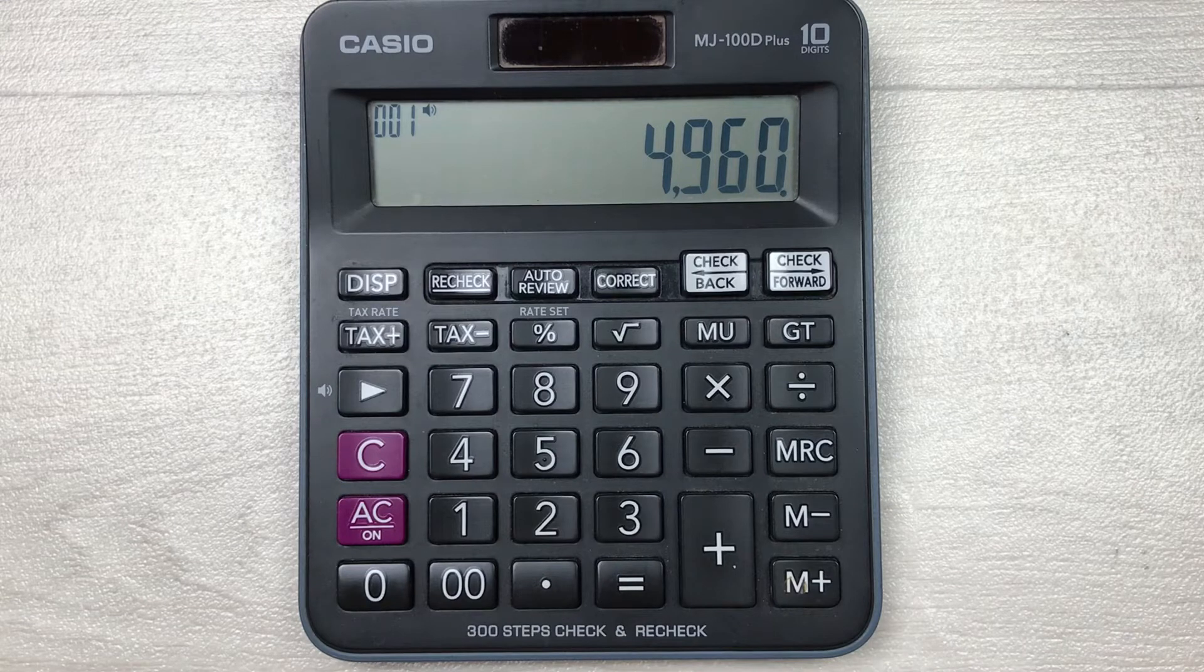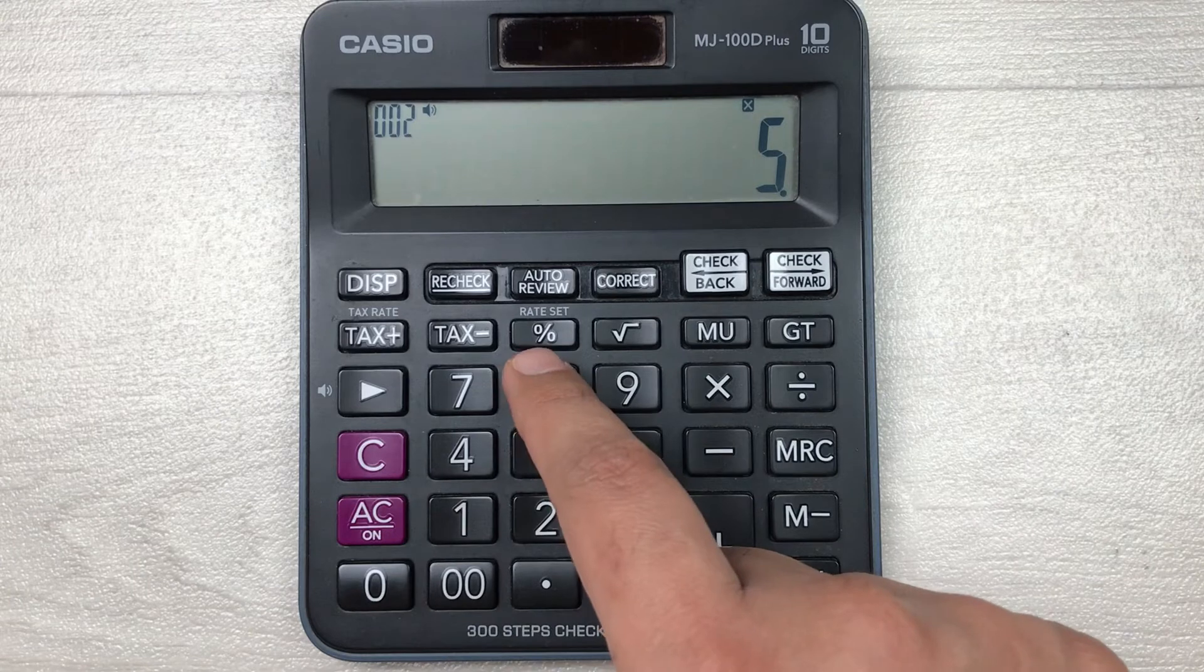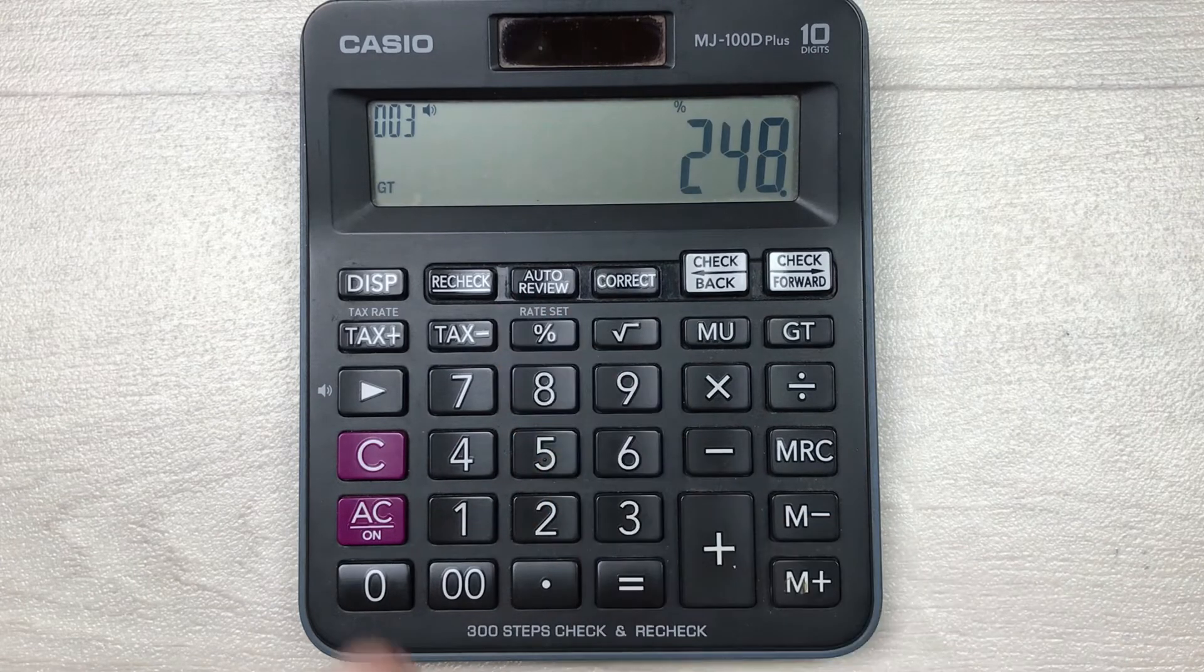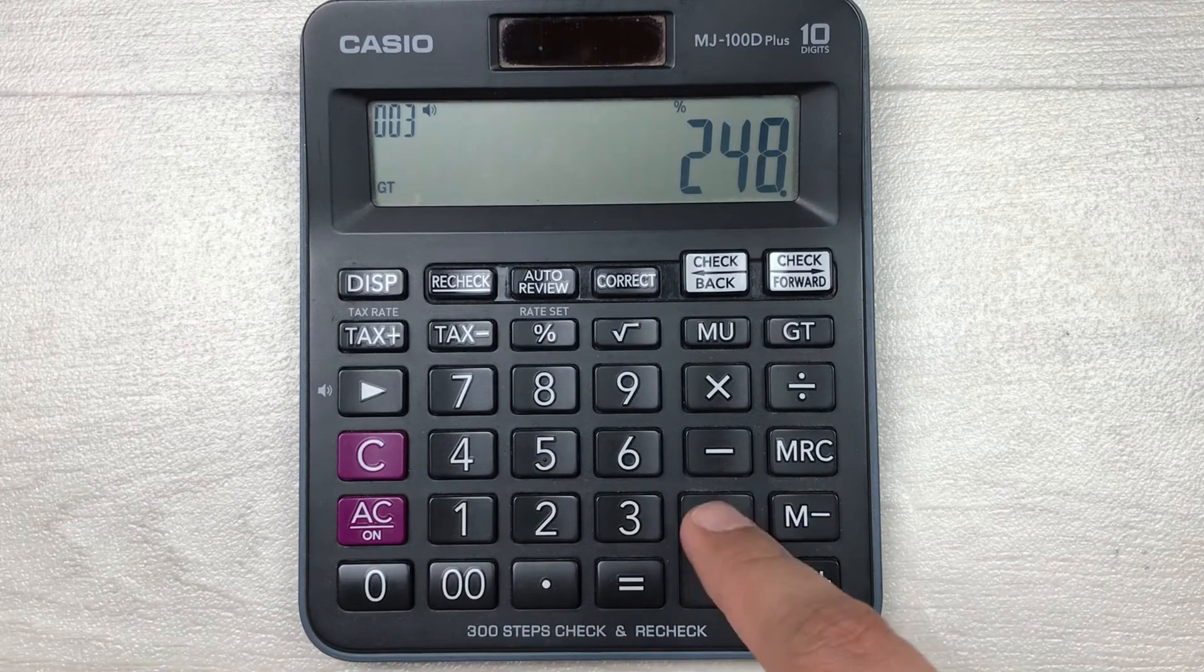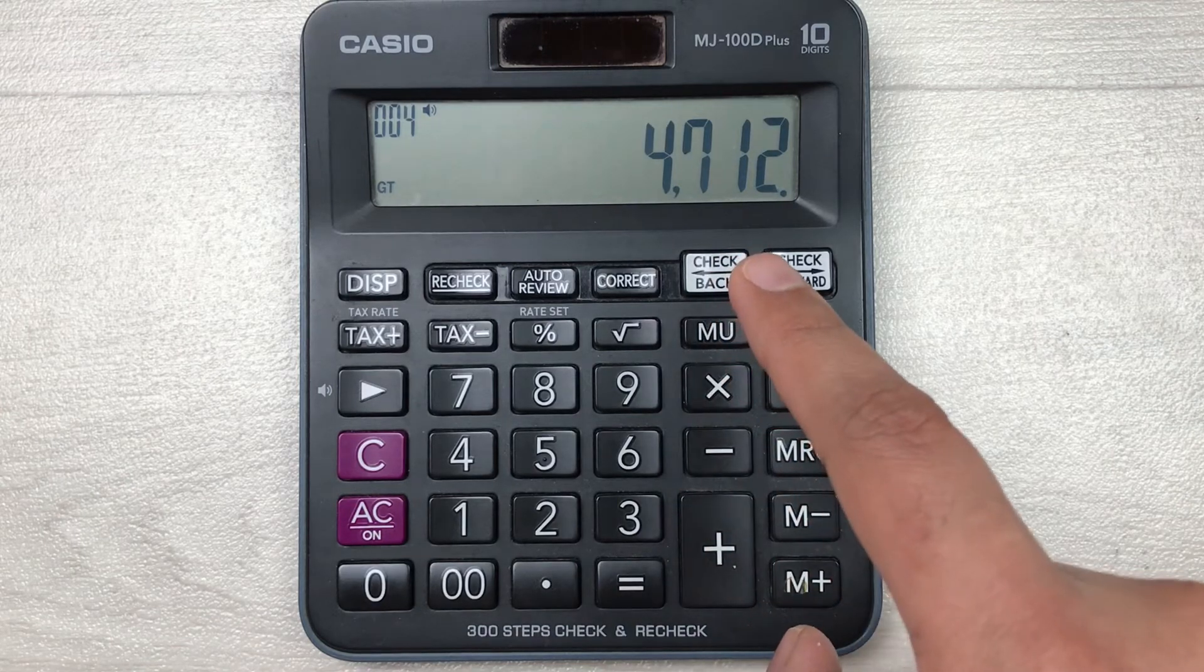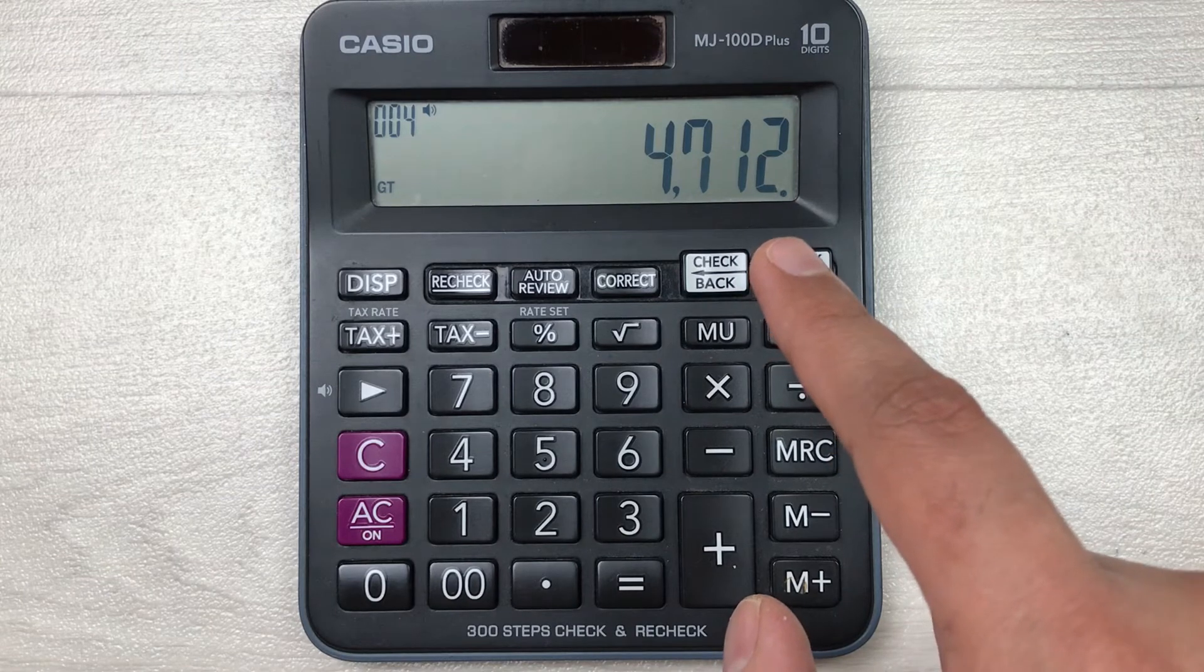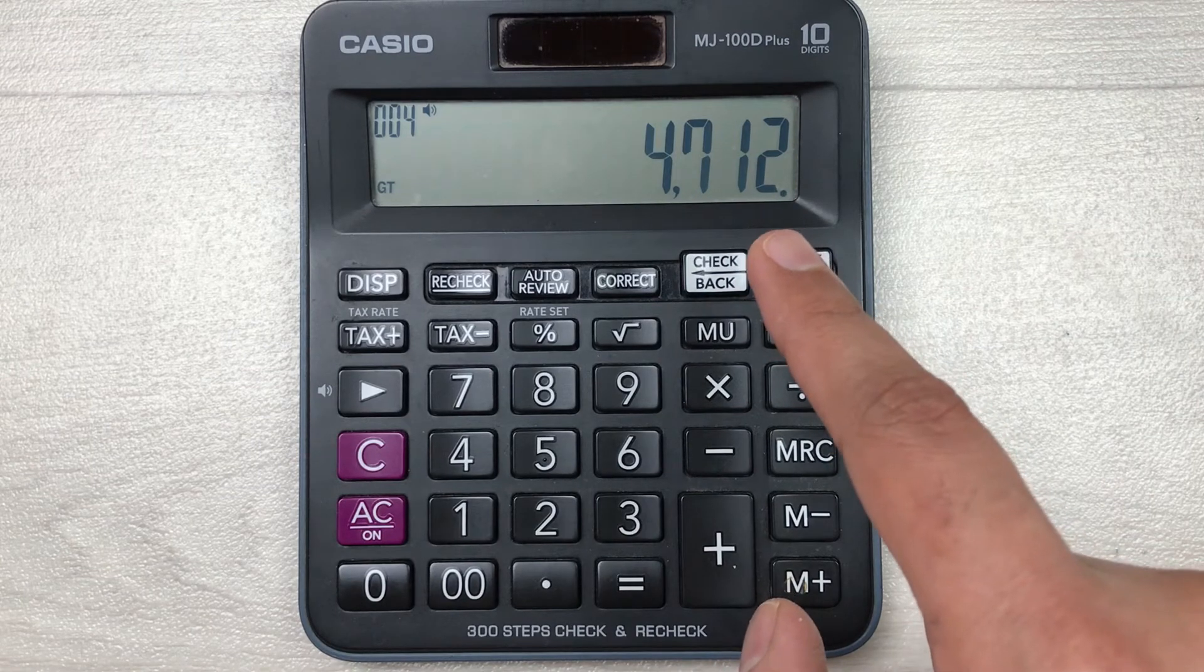So in the first step we multiply it with 5, then we press this percentage button, and in the last we press this minus button. So guys, here is our final answer. 4712 is the final price after 5% off.